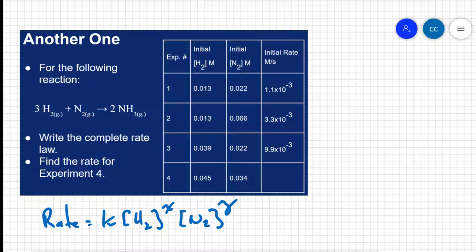So once we do that, then we have to take a look at our data to see if we can figure out what the exponents are. So if I want to find x, if I want to find the exponent for hydrogen, I need to limit my variables. So if I'm testing how hydrogen affects the rate, I need to keep the nitrogen constant.